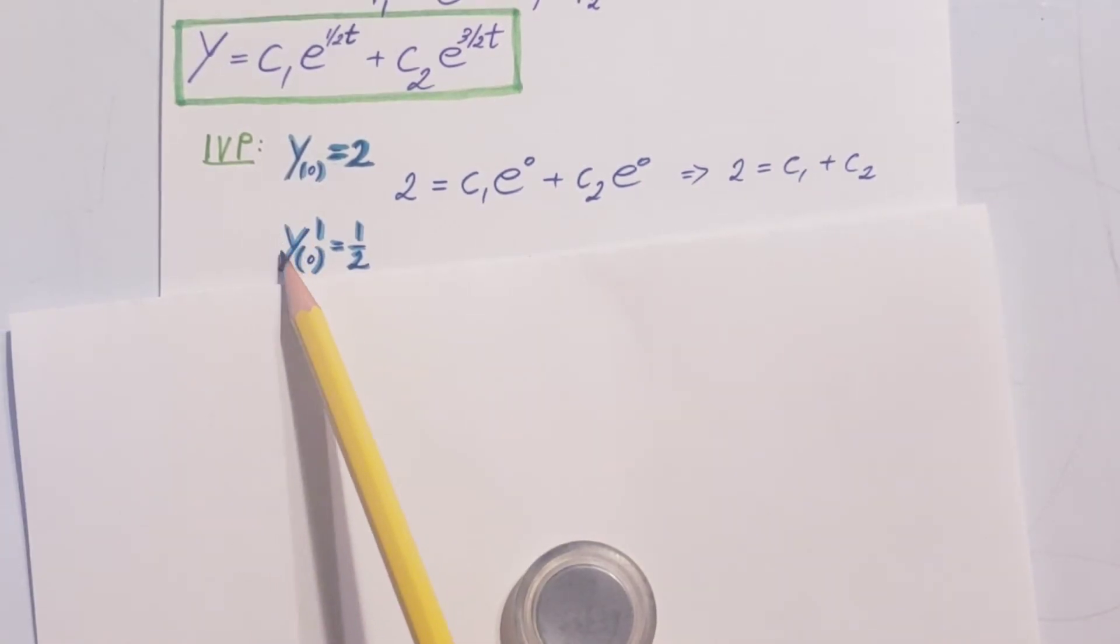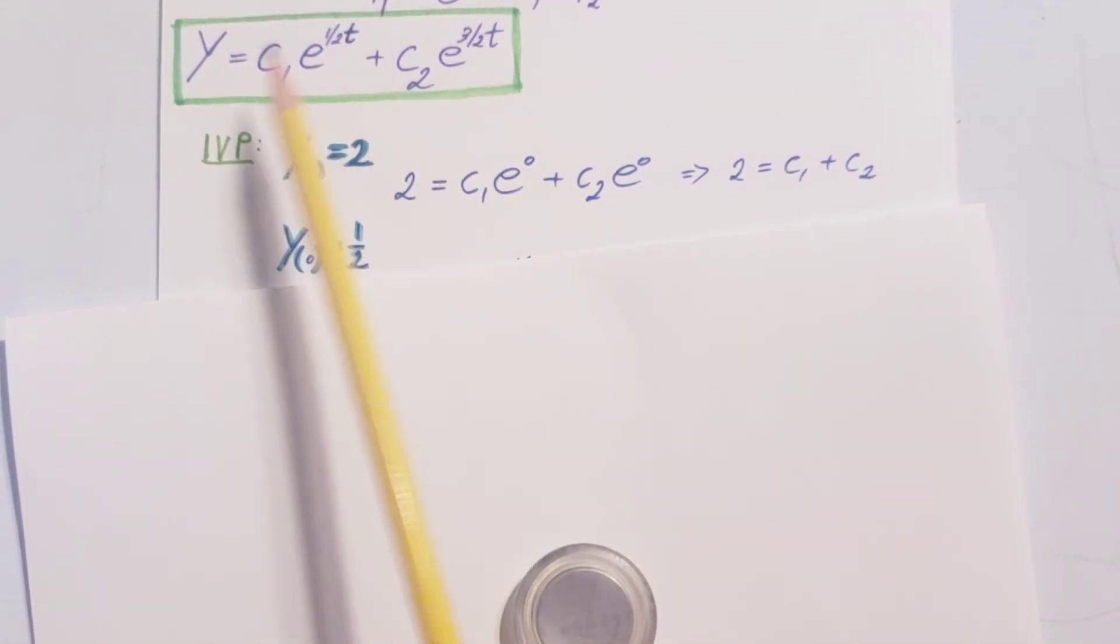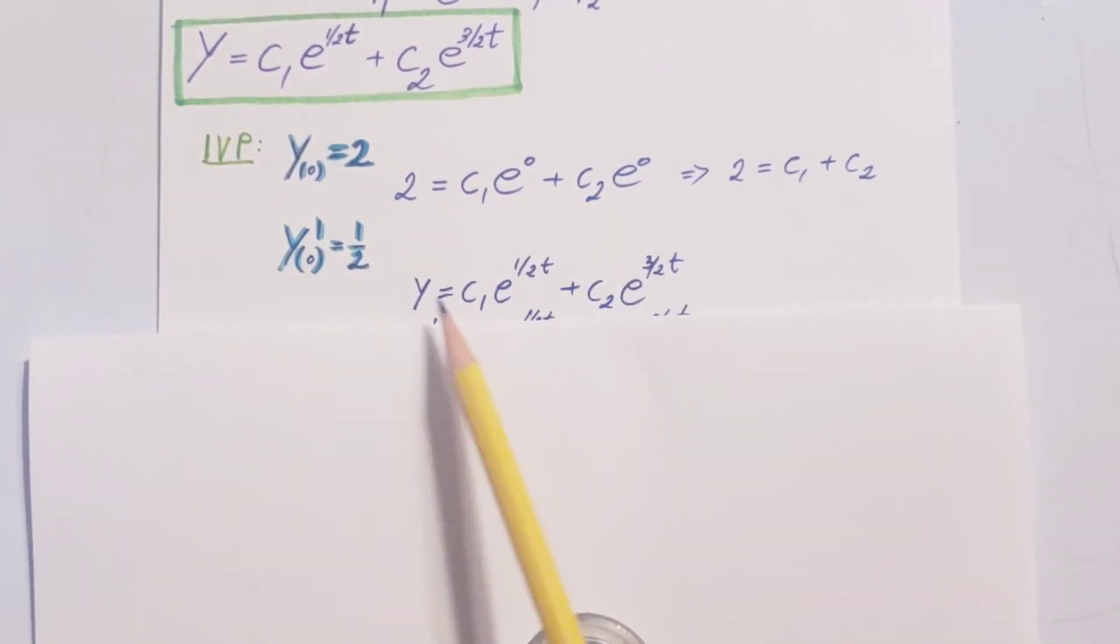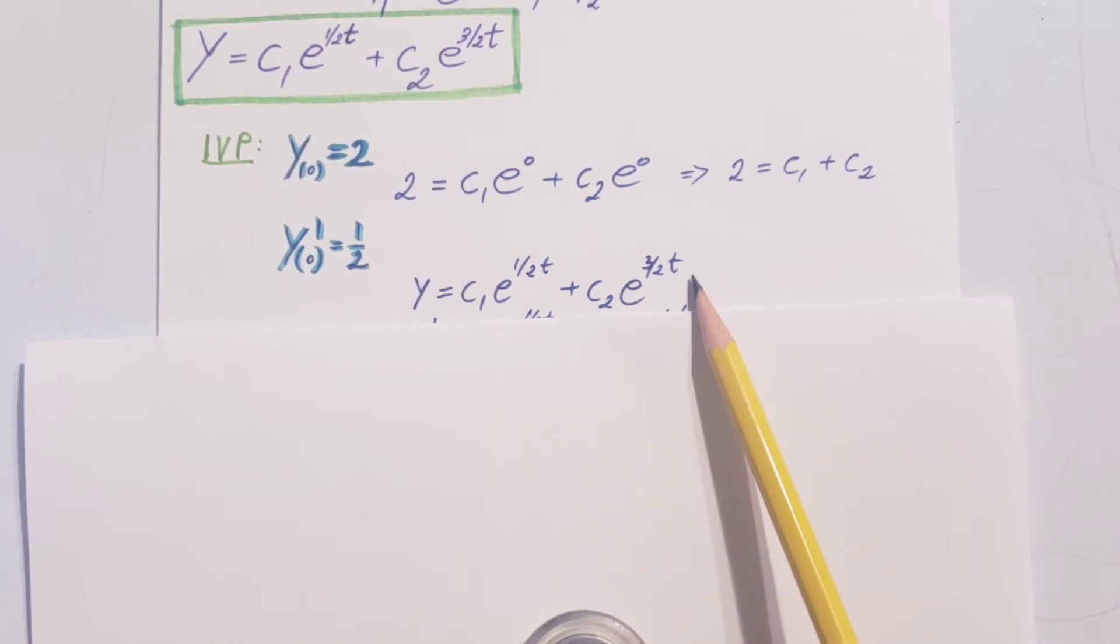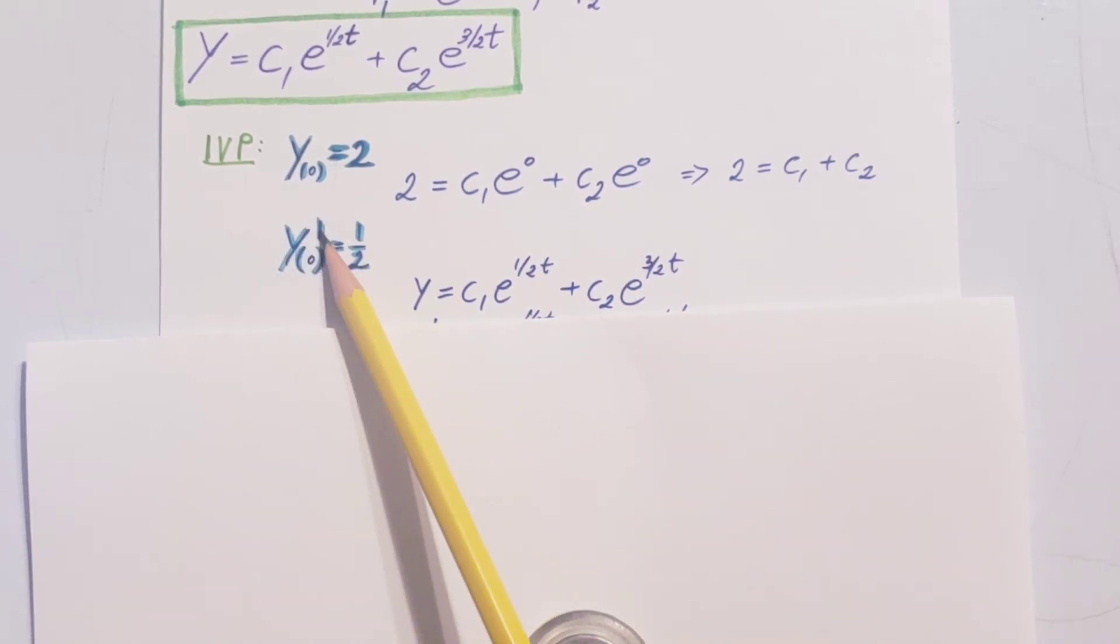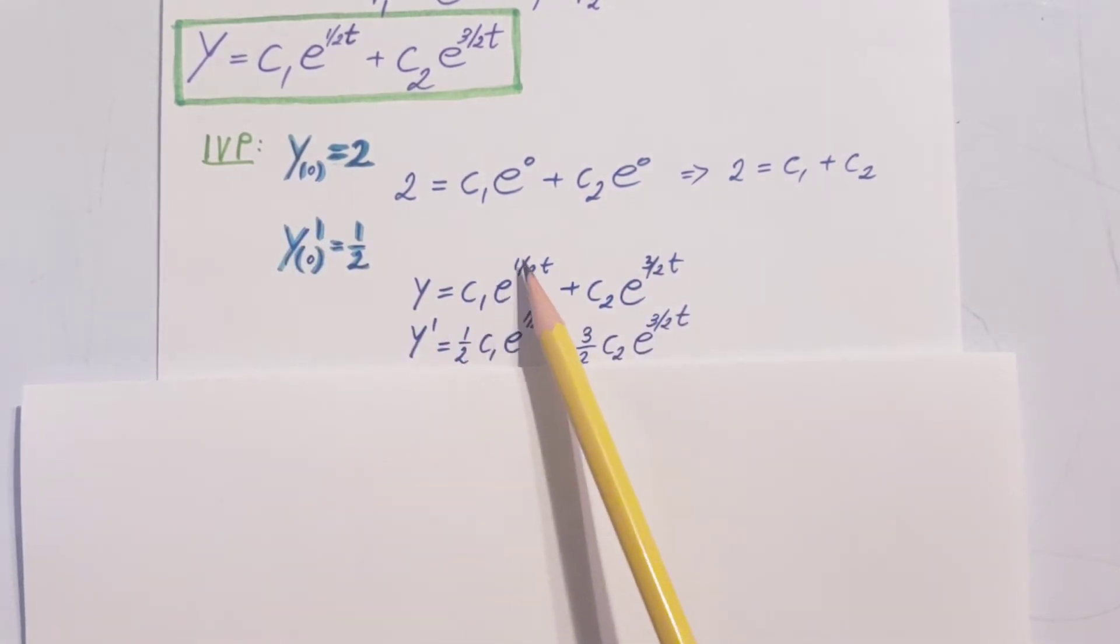Now, we also know that the y derivative at 0 is equal to 1/2. Now, what we found here is just simply y. So I'm going to bring it down here. But we need to take a derivative of it. So take a derivative of this and of this. Here it is.